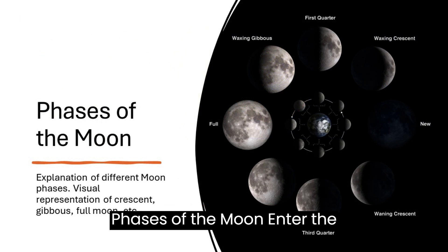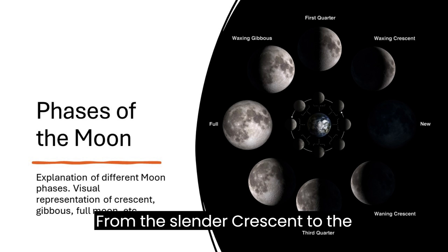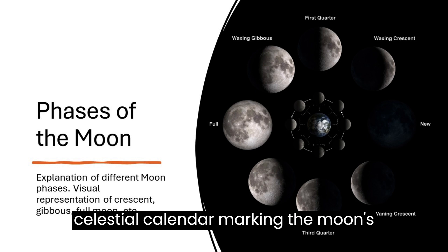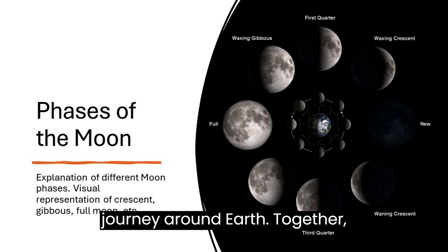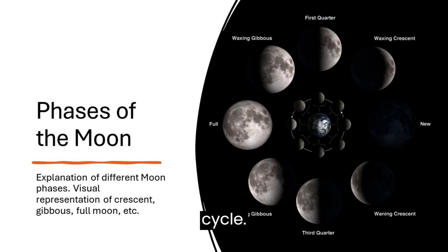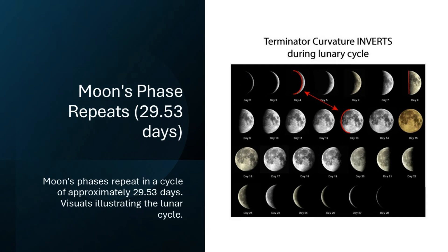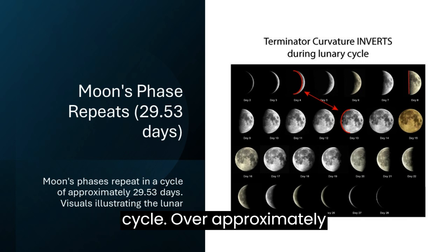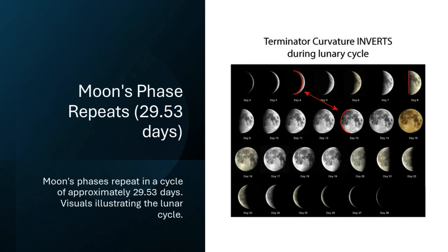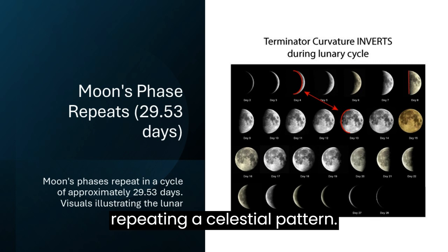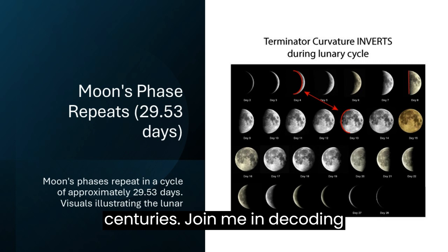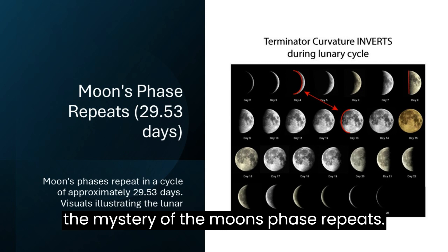Enter the enchanting realm of lunar phases. From the slender crescent to the brilliant full Moon, the Moon showcases a captivating array of phases. These phases are a celestial calendar, marking the Moon's journey around Earth. Together, let's decipher the language of the lunar cycle. Over approximately 29.53 days, the Moon cycles through its phases, repeating a celestial pattern — a celestial clock that has fascinated sky gazers for centuries.